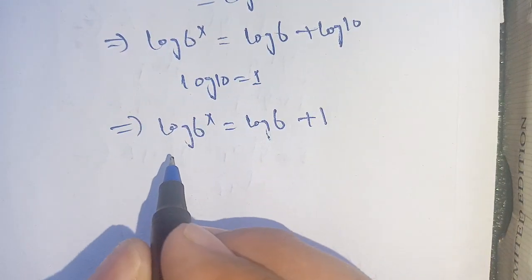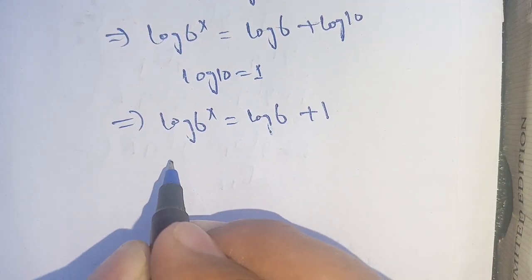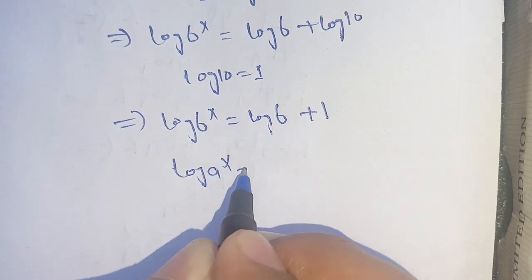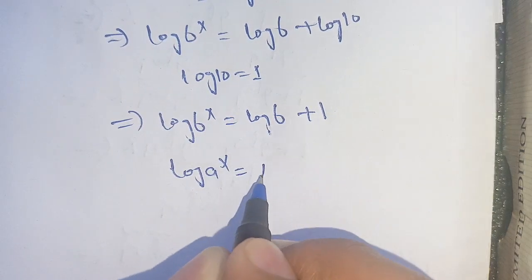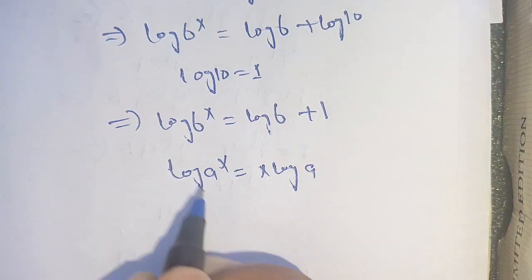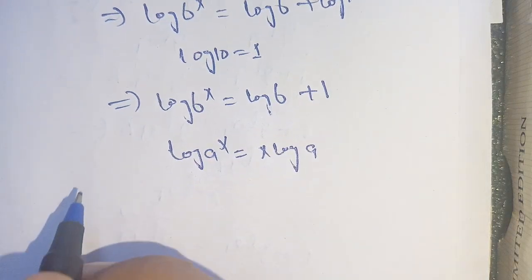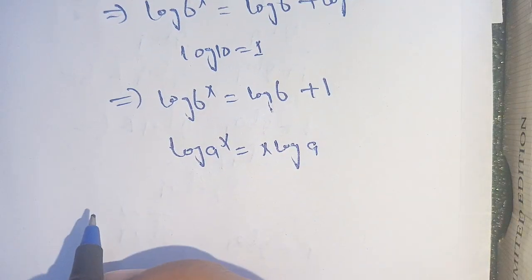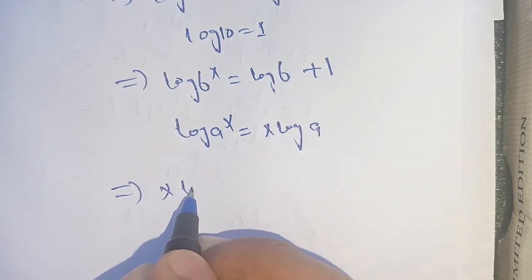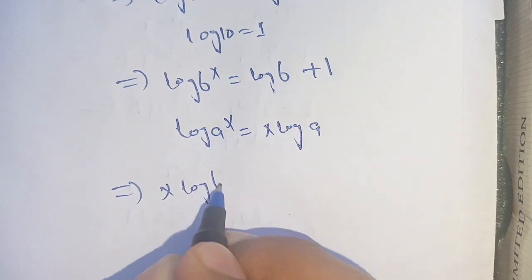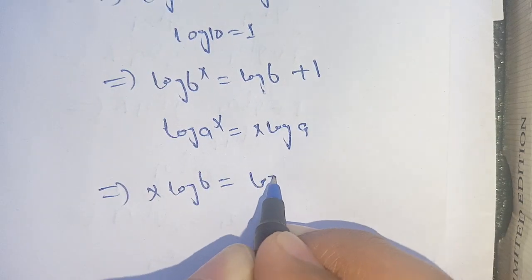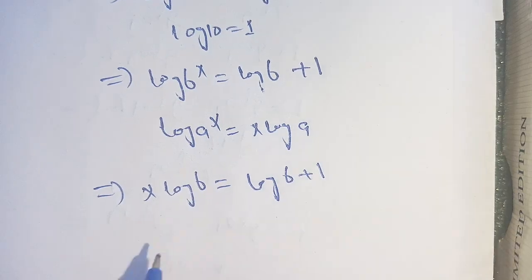Now, on using the logarithm property log of a power x is equal to x log of a, we apply this identity on the left hand side and get x log of 6 is equal to log of 6 plus 1.